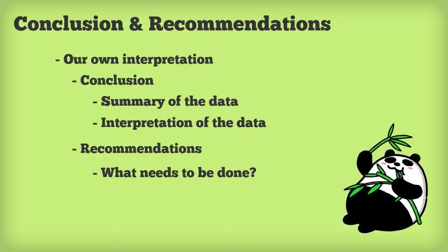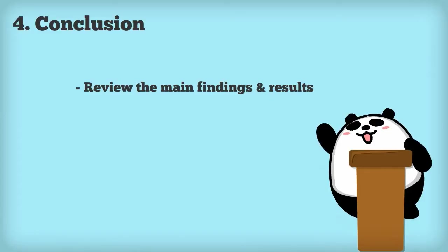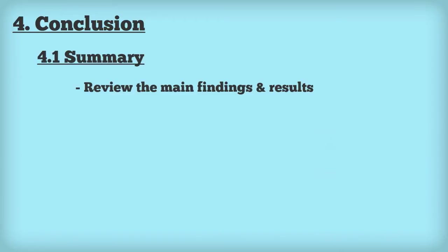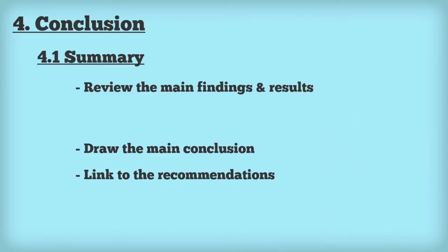First, consider your organisation. The conclusion is after the findings and is usually section 4, while the recommendations is section 5. The conclusion section is where we review the main findings and results and express them in general terms. This could be section 4.1, called summary. Remember to underline your headings and indent the text to make it easier to read. We'll then draw a main conclusion and link to the recommendations by showing a need for action. This could be section 4.2, called need for action.